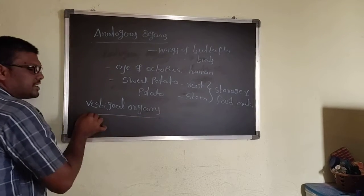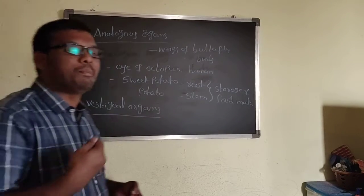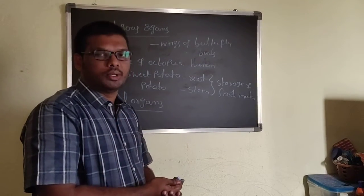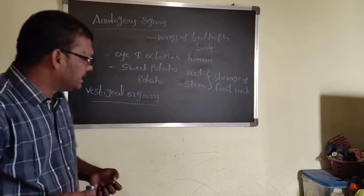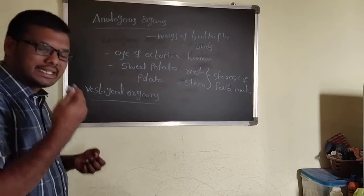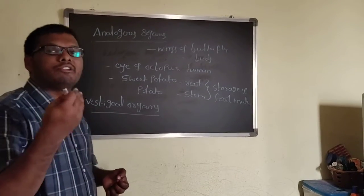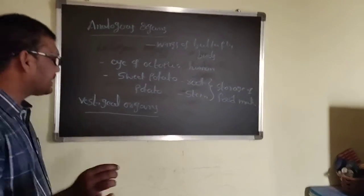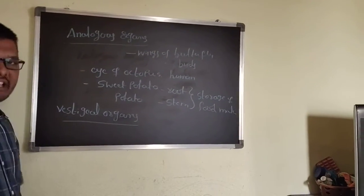Vestigial organs means in previous ancestors, that organ was useful. Later, it will gradually disappear or be reduced and is not able to be useful. That type of organ is called a vestigial organ.